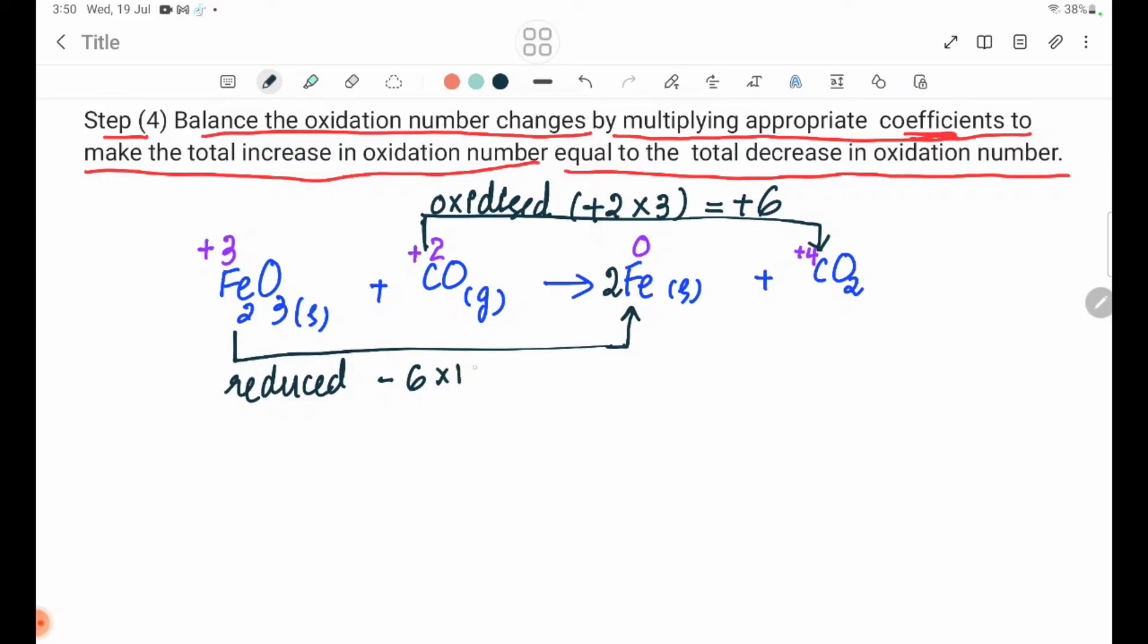We have to add minus 6, which gives us 3. Now, we have to add Fe2O3. Fe2O3 plus CO. CO is 3. We have to add 3.